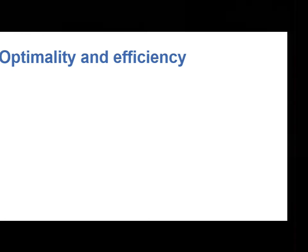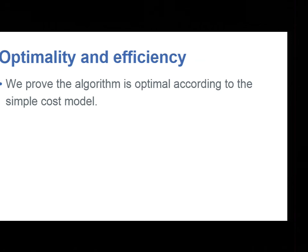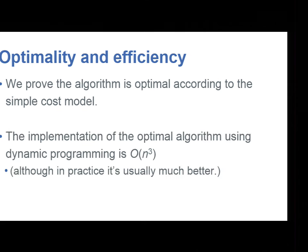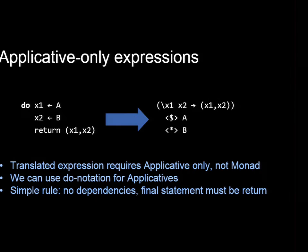So what about optimality and efficiency? We prove that our algorithm respects the optimality of a simple cost model. Implementing this algorithm is n cubed if you use dynamic programming. Although in practice, what we found is that it's much faster than that. So if you have applicative only, a type that's applicative only, then you can use the do syntax as long as you have no dependencies between the statements. When there are no dependencies, we can guarantee to produce an applicative expression. Then the type of this will only have an applicative constraint, not a monad constraint. So there's a very simple rule that says when you can use do notation with an applicative: it's just there are no dependencies between the statements.